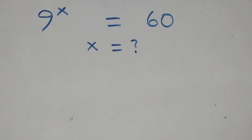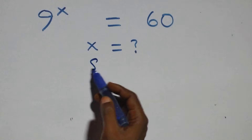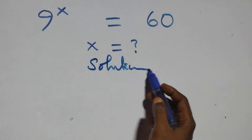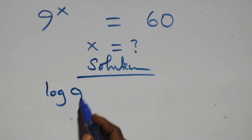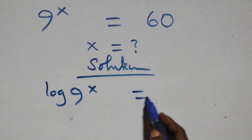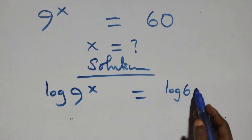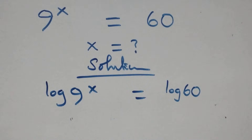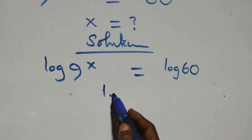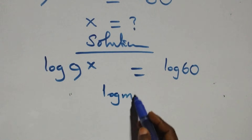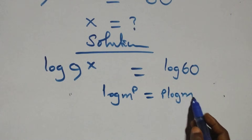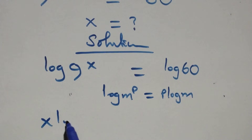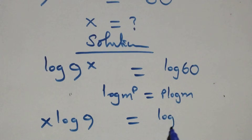Hello, you are welcome. How to solve this nice exponential equation — two solutions from here. We take the log on both sides. Here we have log 9 raised to power x equals to log 60. We apply the power rule of logs: log n raised to power p is the same as p log n. So x log 9 equals log 60.